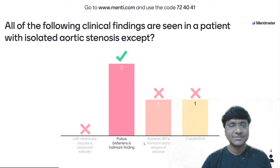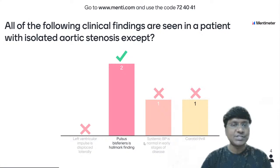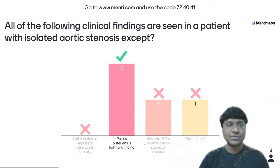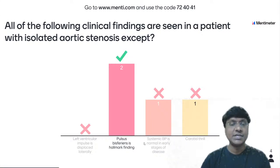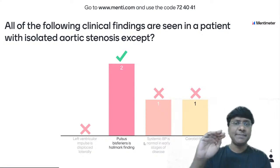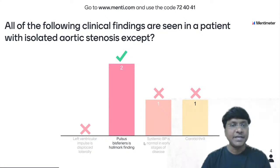Majority of you have answered this correctly. The answer is: pulses bisferiens is the hallmark finding — this is an incorrect statement. In patients with aortic stenosis, the hallmark pulse is pulses parvus et tardus — a slow rising pulse with late peaking. It is not pulses bisferiens. Where do you have pulses bisferiens? Can anyone answer?